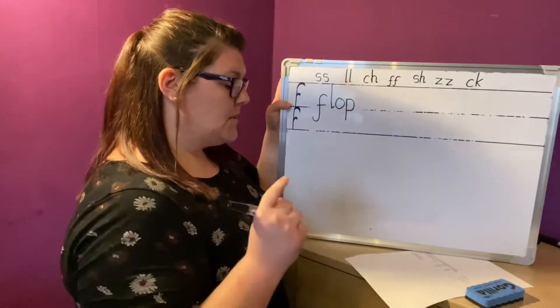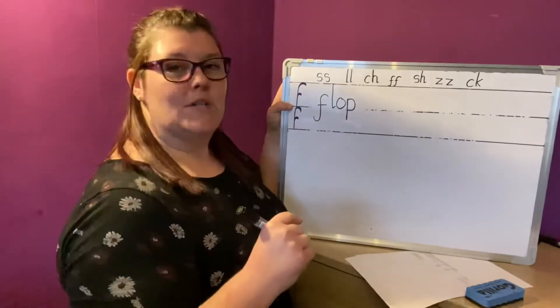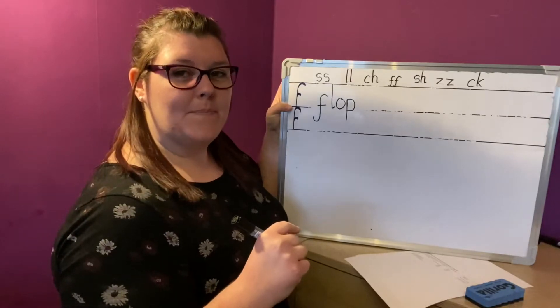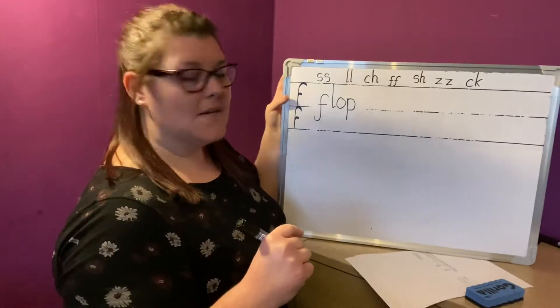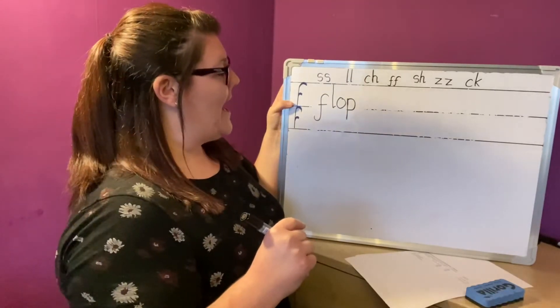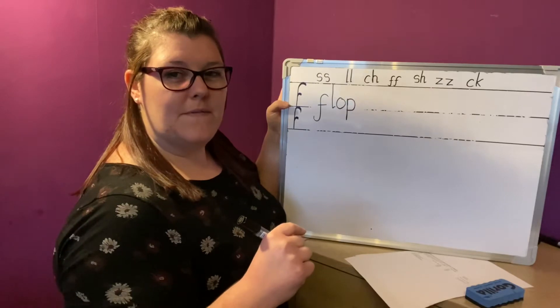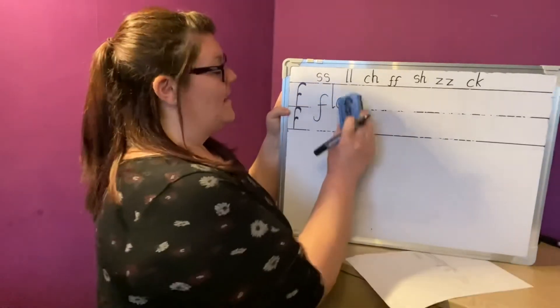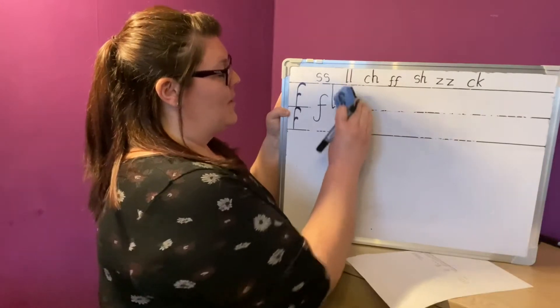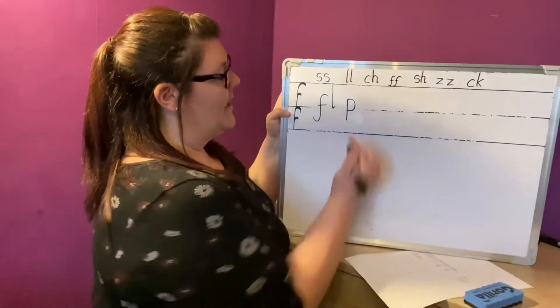Okay, you've got flop on your board, but I don't want that anymore. I want flap, like fairies flap their wings. F-L-A-P. What sound do we need to change? Flap. That's right, the O. And what are we going to put there instead? Flap. An A.